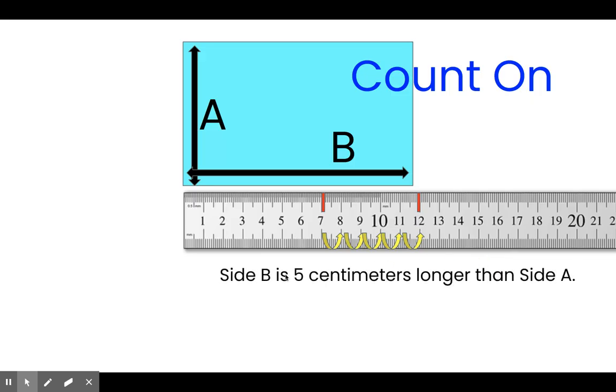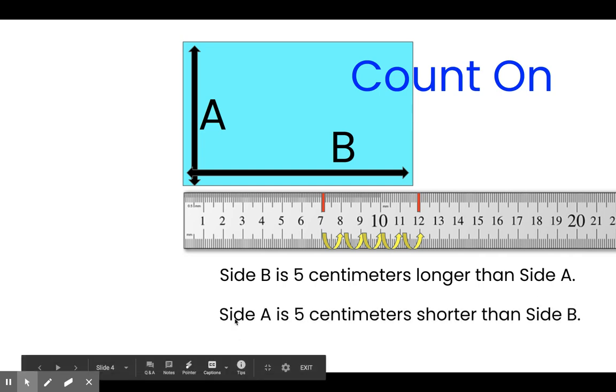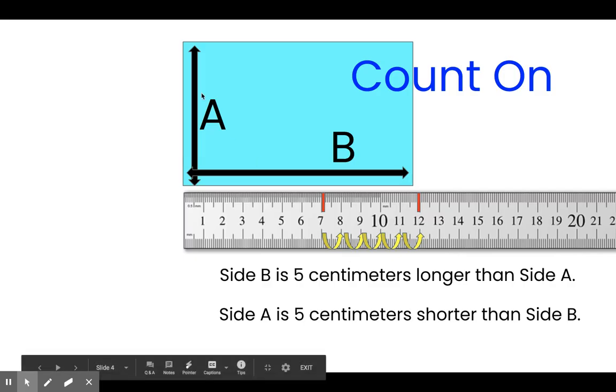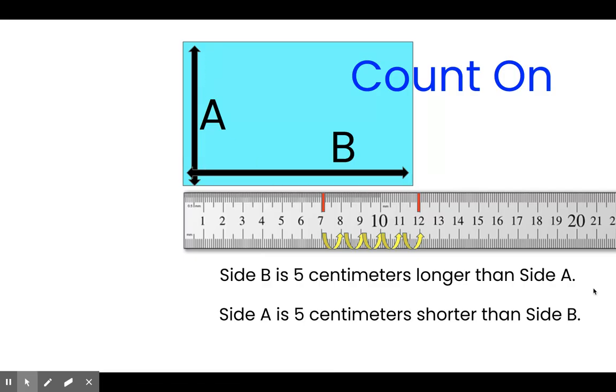That means that side B is 5 centimeters longer than side A. That's true. But we could also say side A is 5 centimeters shorter than side B. That's accurate as well. We used the count on strategy using our ruler to count on from our shortest side to our longest side to find the difference between the side A measurement and side B measurement.